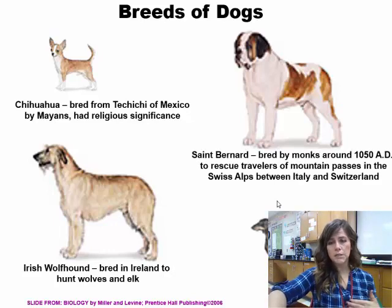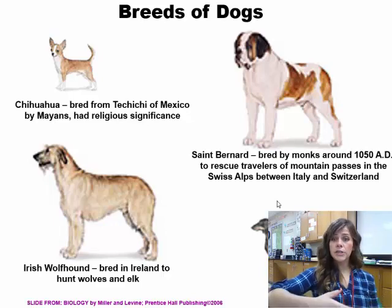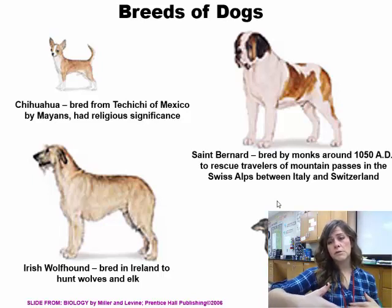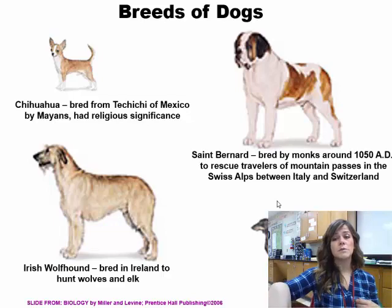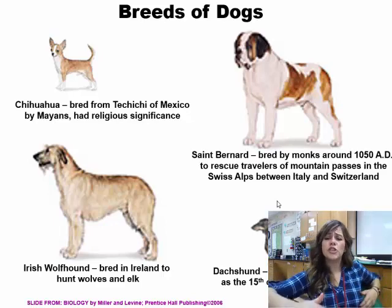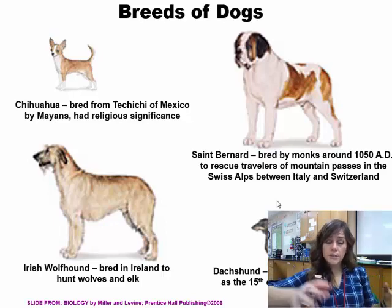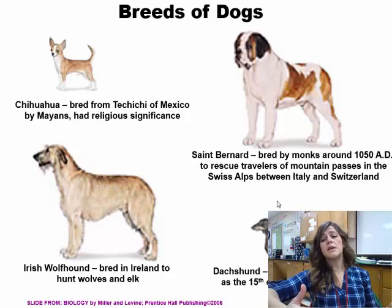The St. Bernard is a huge dog that was bred to be that size so it could rescue travelers at mountain passes in the Swiss Alps between Italy and Switzerland. And the Dachshund was bred in Germany to hunt badgers - badgers are small things, so it's important that the Dachshund be a small little dog.